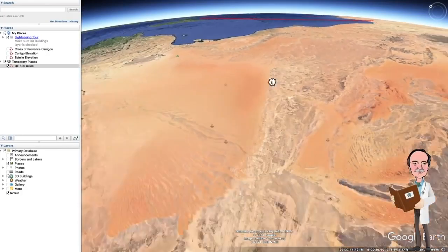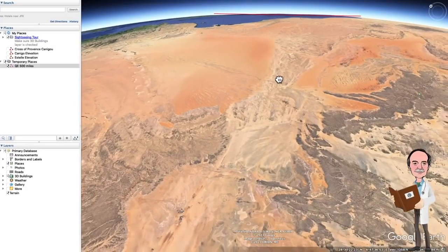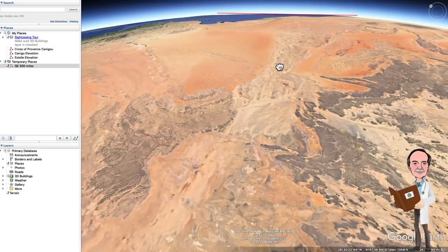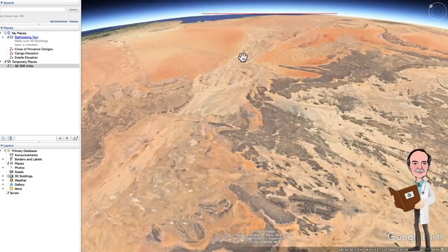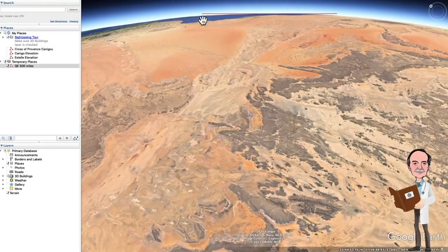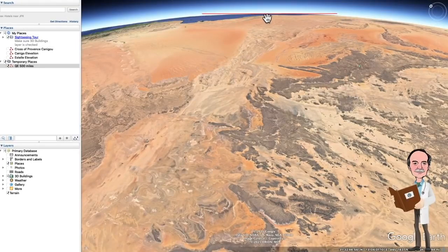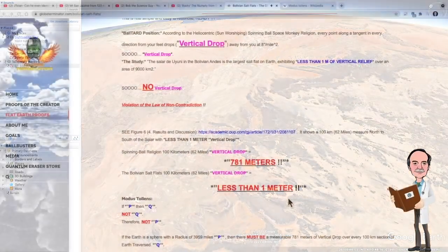Now, you can already see a problem here and that is that line no longer conforms to the surface of the earth. And as you can clearly see, it is now a tangent line. This end of the line and that end of the line are at a much higher altitude than the part of the line in the middle. That's what happens when you draw a perfectly straight line on a curved surface.